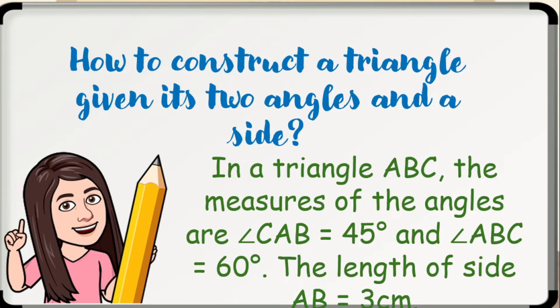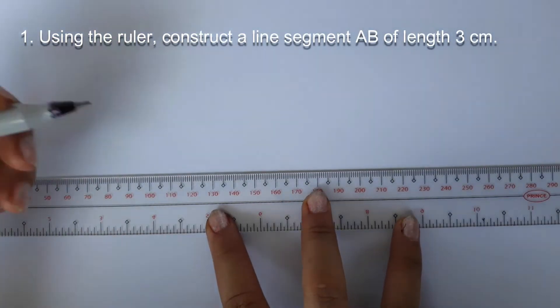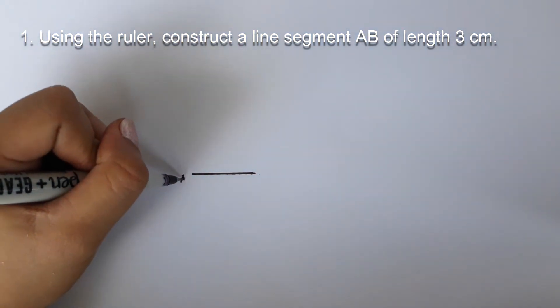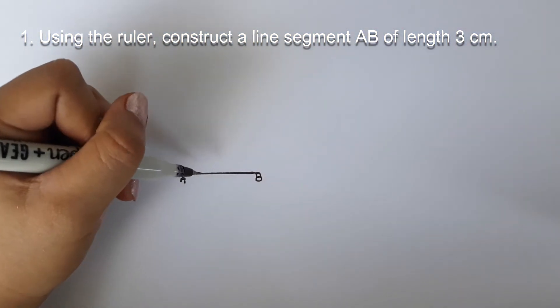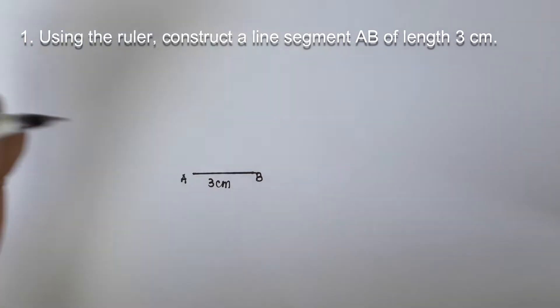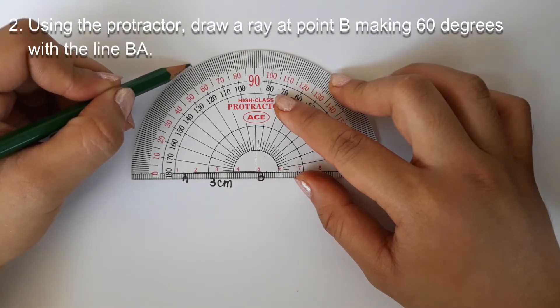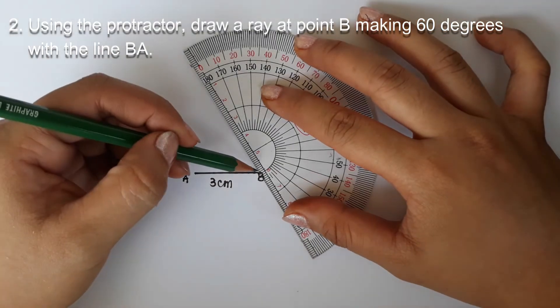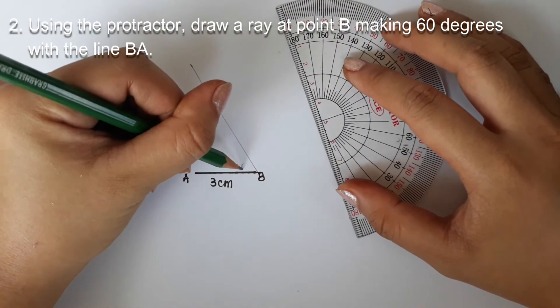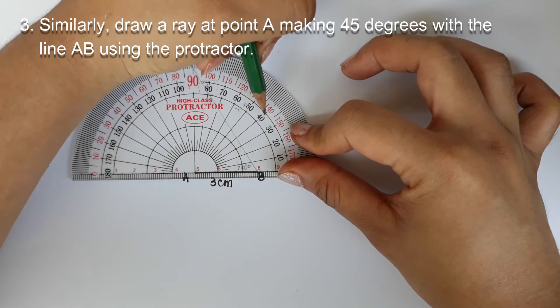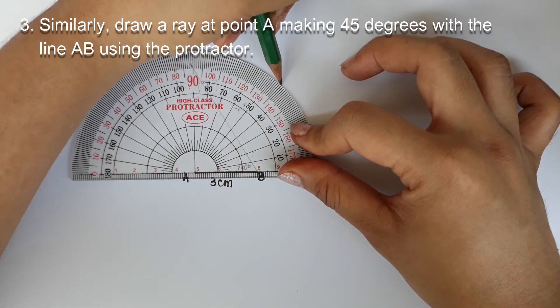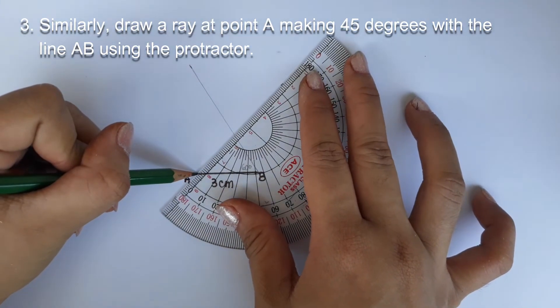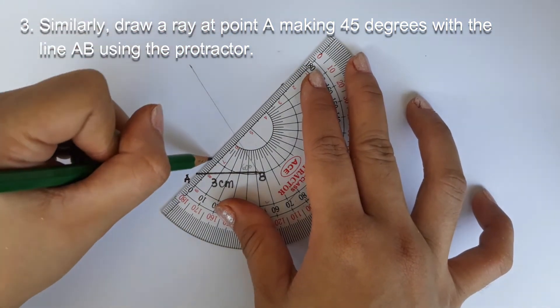Here are the steps. Step 1. Using the ruler, construct a line segment AB of the length 3 centimeters. Step 2. Using the protractor, draw a ray at point B making 60 degrees with the line BA. Step 3. Similarly, draw a ray at point A making 45 degrees with the line AB using the protractor.